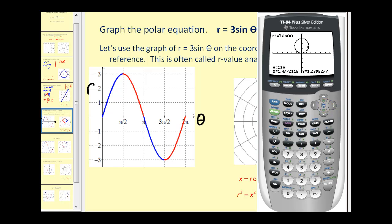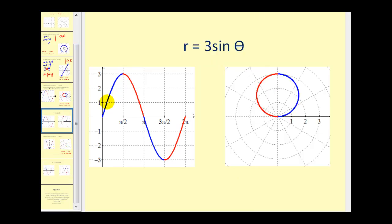Now, of course, a third option would be to use the table feature, or essentially complete a t table, where you pick an angle, find the corresponding value of r, and then plot that point. Here's another graph of what we just found using some software.